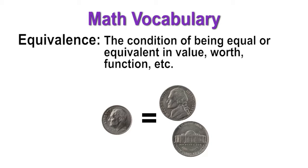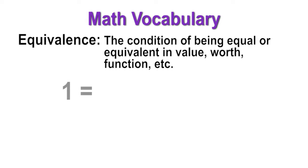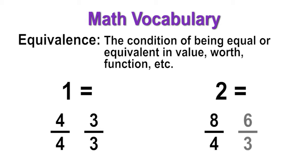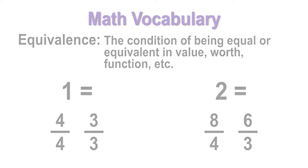In third grade, students learn that a whole number, such as one, can be written in fractional form as 4 fourths, 3 thirds, etc., when the numerator is the same as the denominator. Two can also be written as 8 fourths, 6 thirds, etc., when the numerator is twice the denominator.